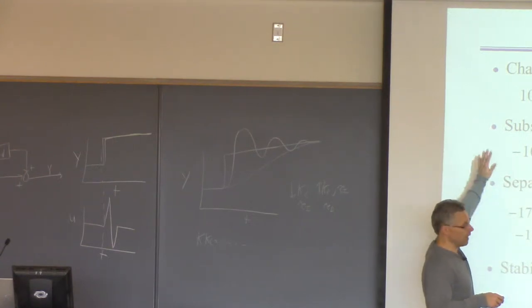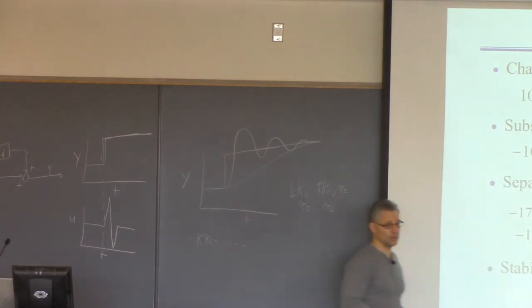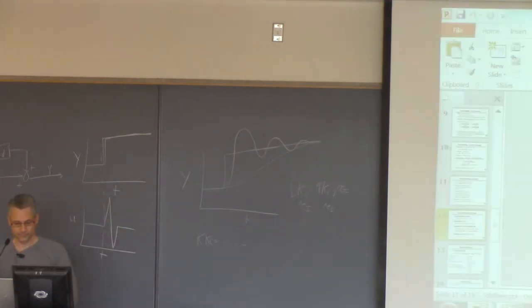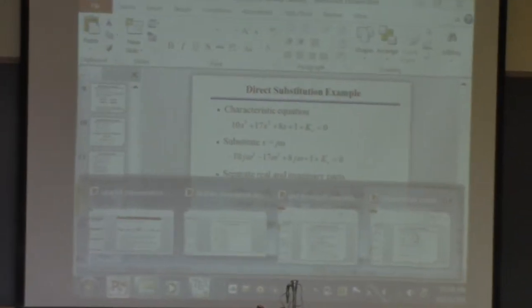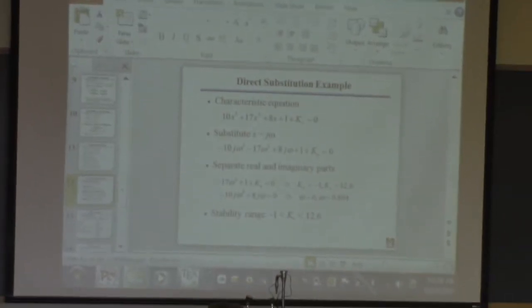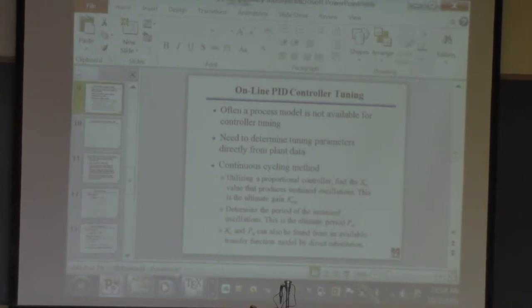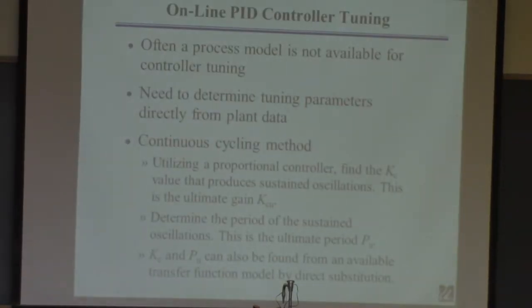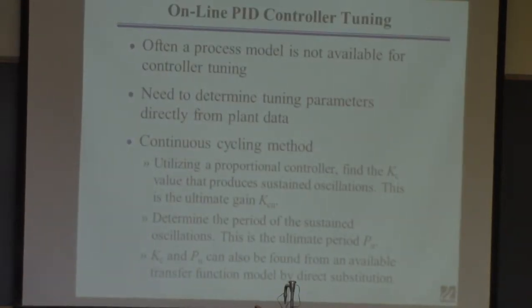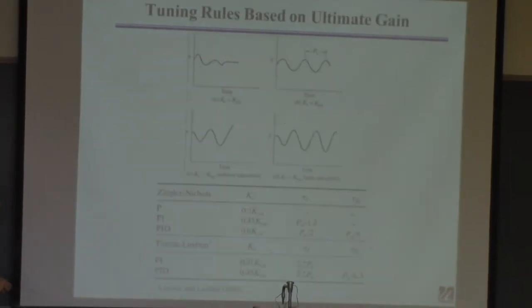For this problem, this is the ultimate gain and this can be used to find the ultimate period. So, if you have a model, which I just said you shouldn't or you may not, but if you did, then you could find this ultimate gain and period directly from the model. Which is what I showed in this example. But I didn't call it by those terms, but that's the kcu and that's omega u related to pu.